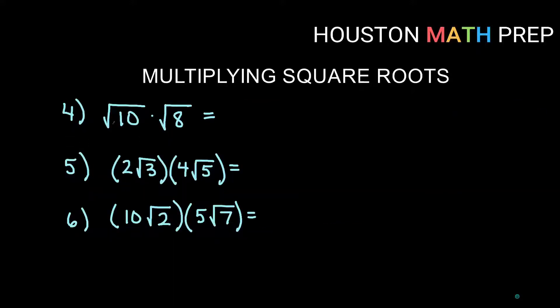Moving on to number 4. Here we have root 10 times root 8. So those are both inside numbers. We multiply them together. 10 times 8 gives us 80. And we check to see if we can reduce 80. So if I look over here and I say 80, and 80 is, let's start with like 4 and 20, let's say. You can start some other way if you want. 4 is 2 times 2, right? So we've got that there.